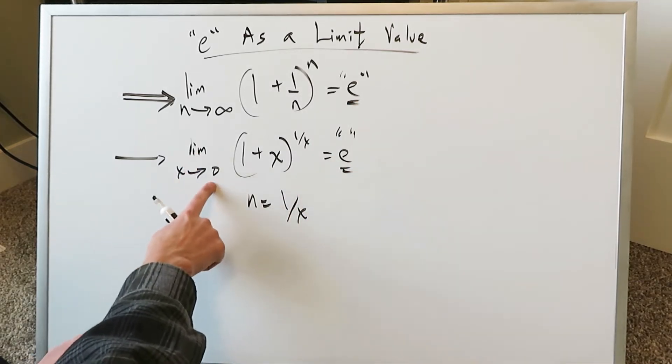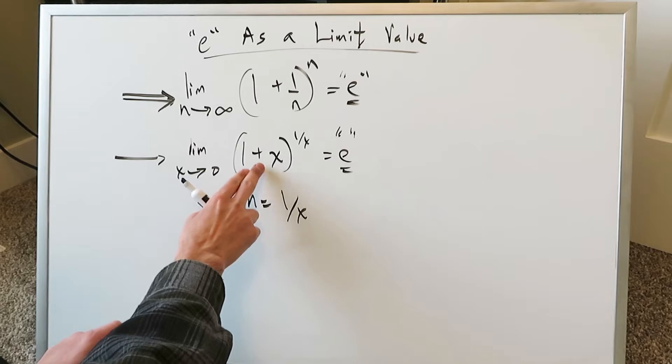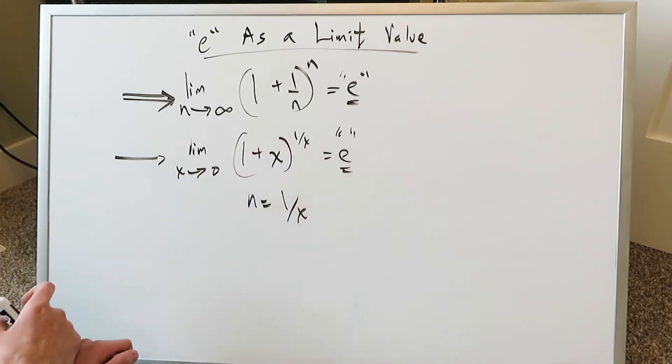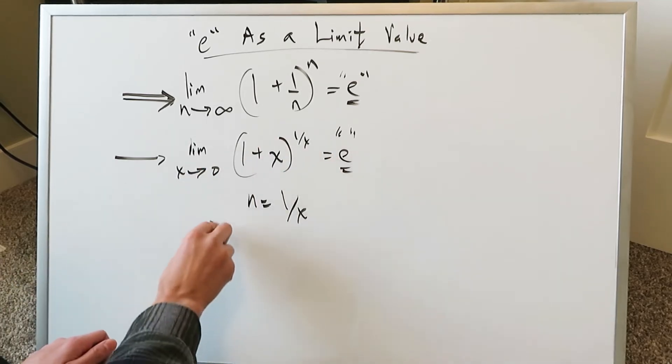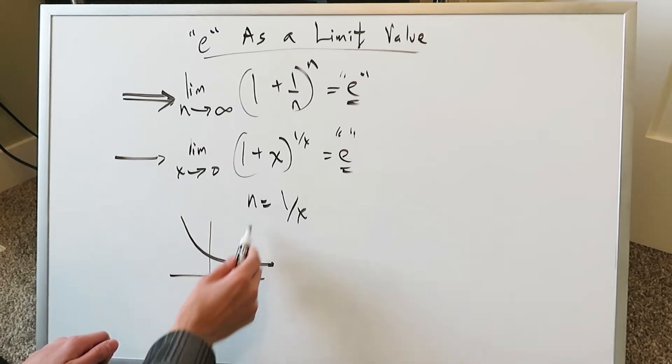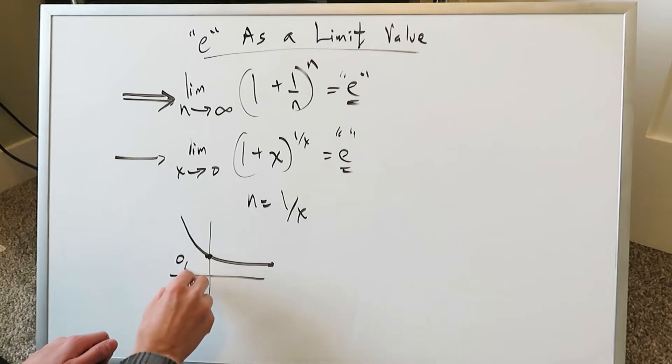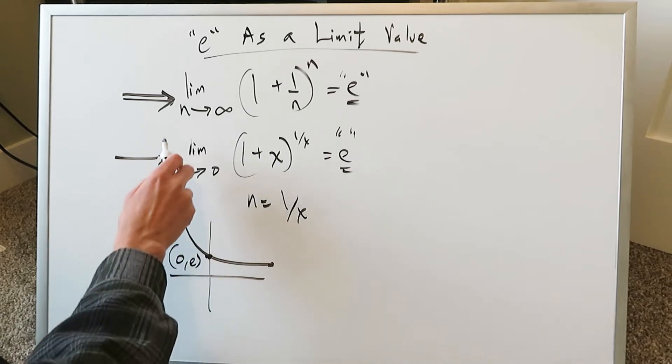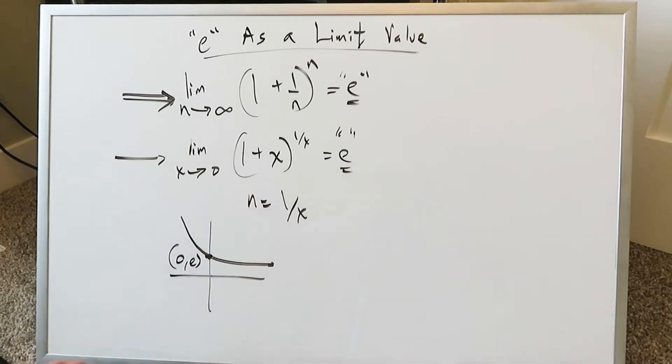In this equation here on the bottom, limit as x approaches 0, you have this equation 1 plus x to the power of 1 over x. You get E over here. If you were to just do a good graph of it, it would be a graph which would look something like this. As x value was 0, you would see a y-intercept here of 0 comma E. But this right here is talking about the second equation over here.